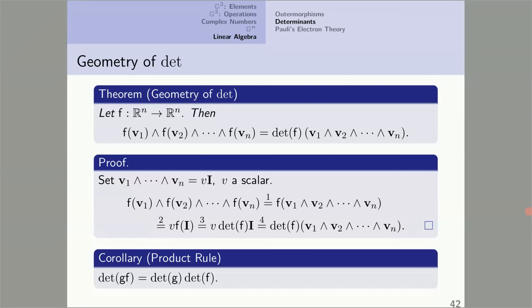As a corollary, we get an easy proof of the formula for the determinant of the composition of two linear transformations, the product rule. This is not so easy to prove using the linear algebra definition of the determinant. If F multiplies N volumes by the determinant of F, and then G multiplies N volumes by the determinant of G, then the composition G of F must multiply N volumes by the product of these two.